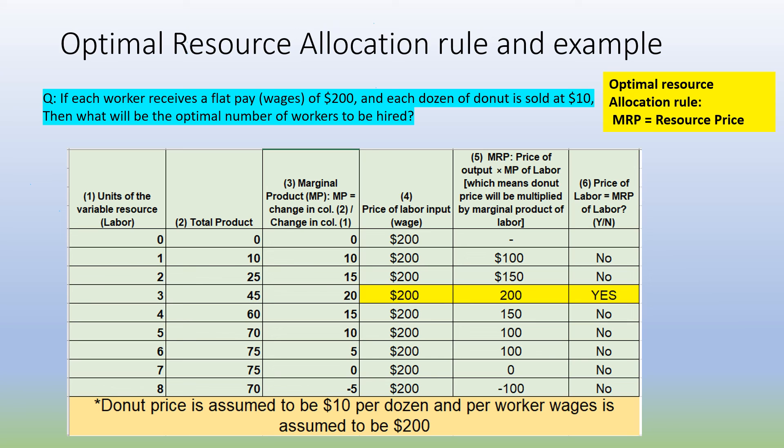To summarize: when using a single-input model, the optimal allocation of resources is the point at which the marginal revenue product of that resource equals the marginal cost of that resource — in this case, wages. I hope the concept was clear. If you have any questions about optimal resource allocation, please put a comment in the chat box. Thank you so much.